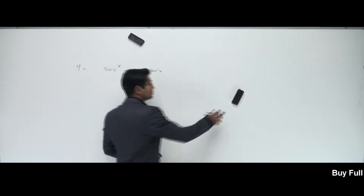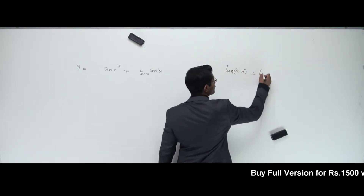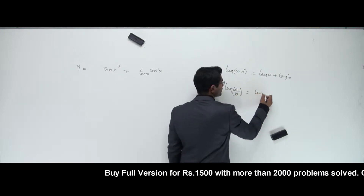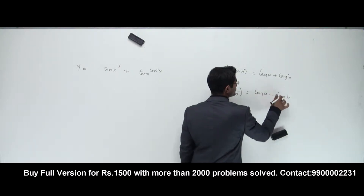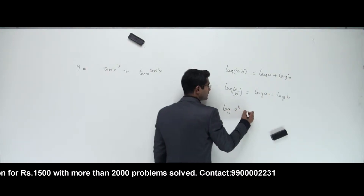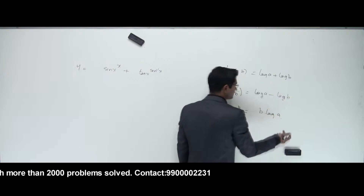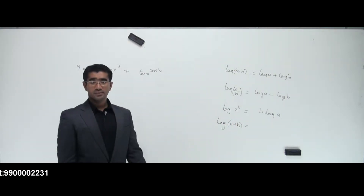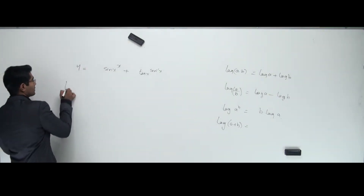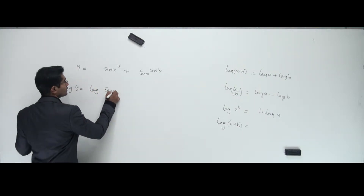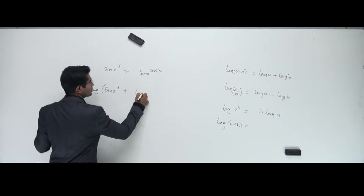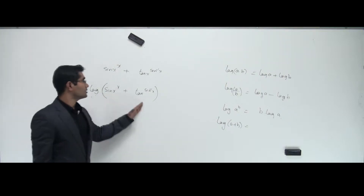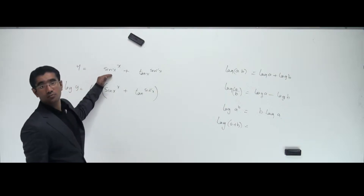I know a formula in log: log of a·b is log a plus log b. If log of a/b, I can write log a minus log b. And if I have log of a to the power b, that is b·log a. But have you seen a formula like log of (a + b)? We don't have anything like that. So if I take log on both sides — log y equals log of (sin x to the power x plus tan x to the power sin⁻¹x) — we don't have any formula for log of (a + b), which means I cannot apply log on both sides for this kind of problem.